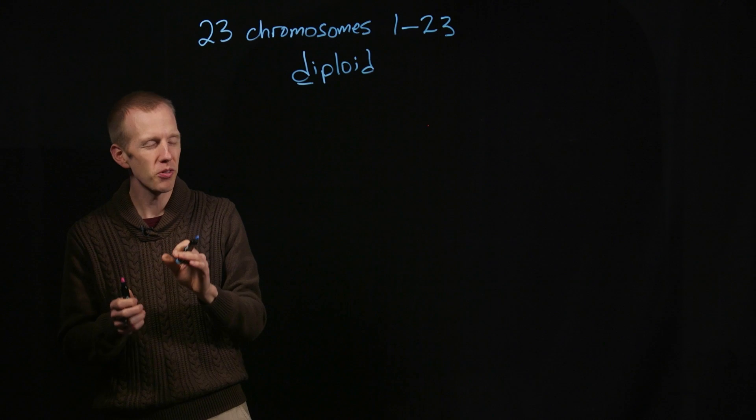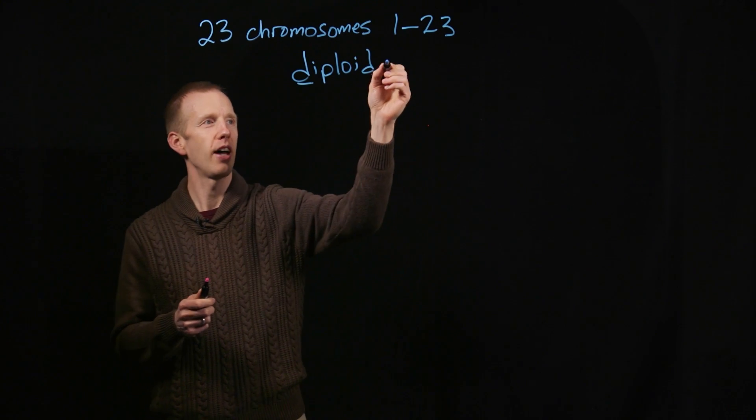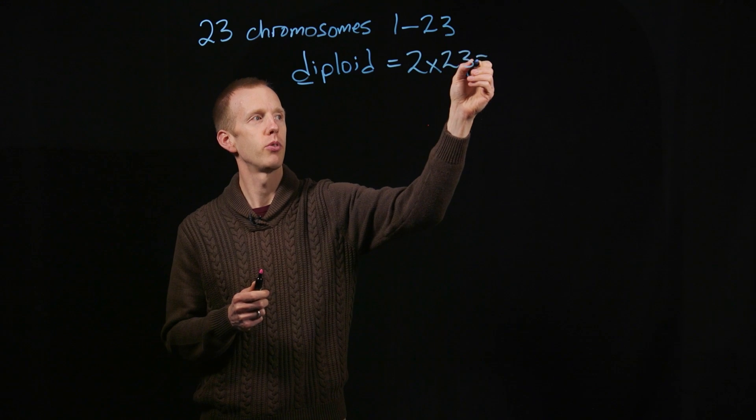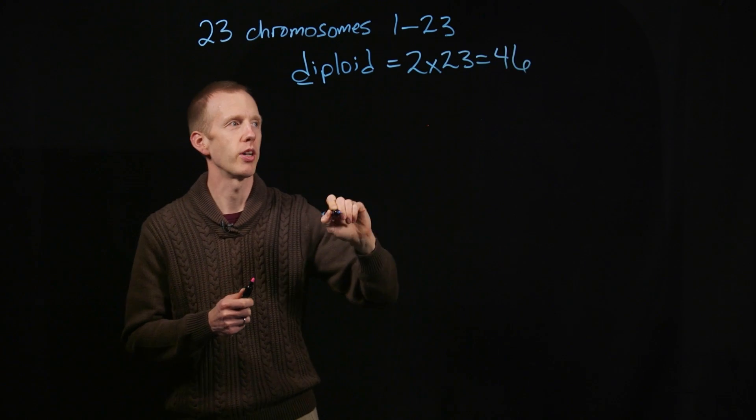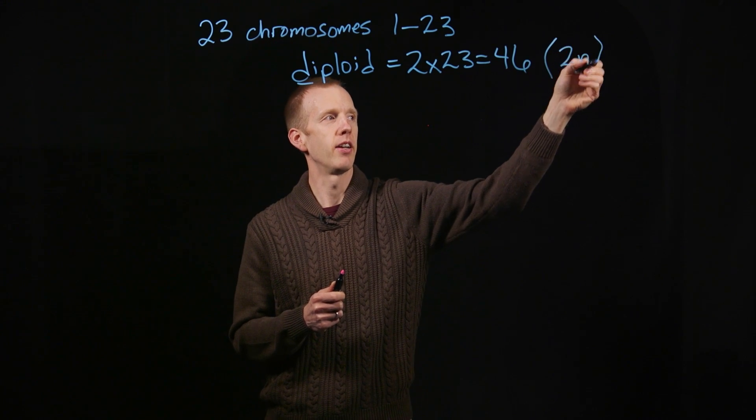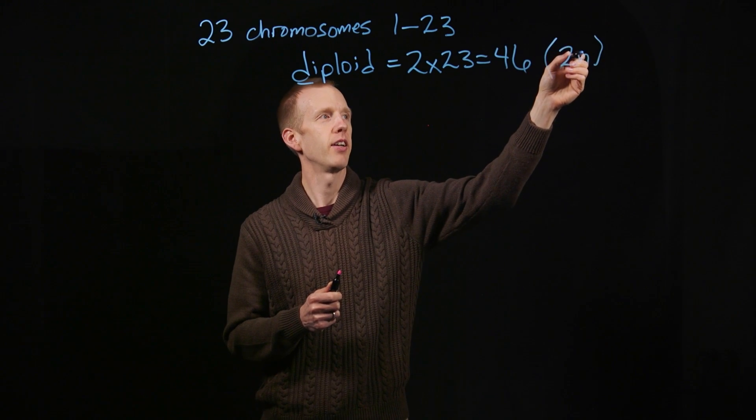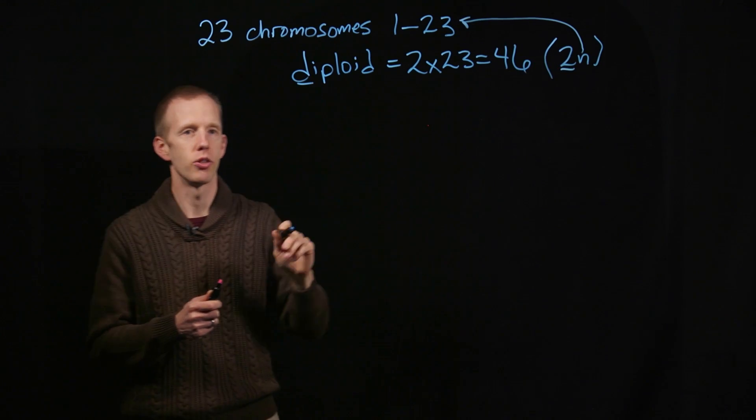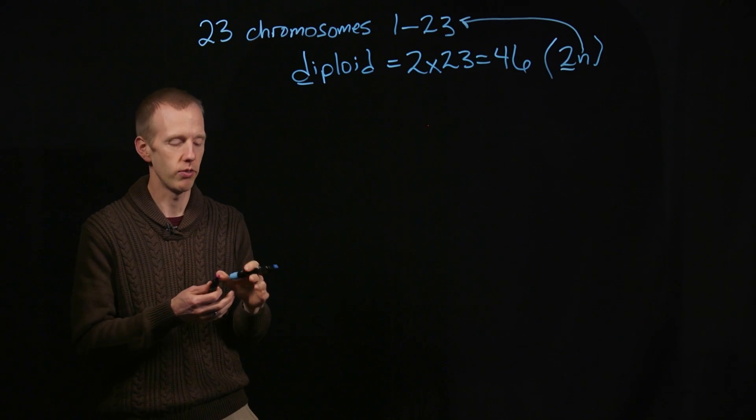So each of us, in most of our cells, have two sets of the 23 chromosomes, or a diploid chromosome number of 46. This is often referred to as the 2n number, where n is the number of chromosomes, and two indicates that an individual diploid has two sets of those chromosomes.